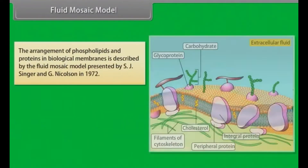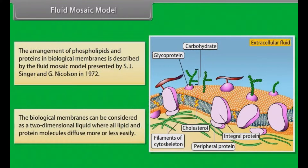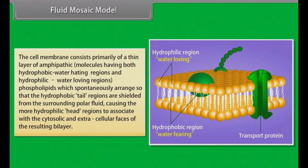Fluid mosaic model. The arrangement of phospholipids and proteins in biological membranes is described by the fluid mosaic model, presented by S.J. Singer and G. Nicholson in 1972. The biological membranes can be considered as a two-dimensional liquid where all lipid and protein molecules diffuse more or less easily.